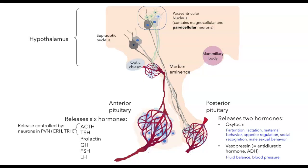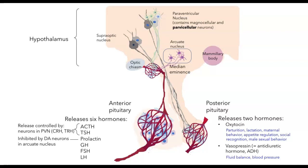Not all of the neurons that influence the anterior pituitary cells lie in the paraventricular nucleus. Another important site is the arcuate nucleus. The arcuate nucleus contains several different types of neurons, but some of them are neurosecretory cells with projections that terminate in the median eminence. For example, there is a set of neurons in the arcuate nucleus that make and release dopamine into the median eminence. We normally think about dopamine as a neurotransmitter, but here it's being used as a hormone. It acts on cells in the anterior pituitary and inhibits the release of prolactin.